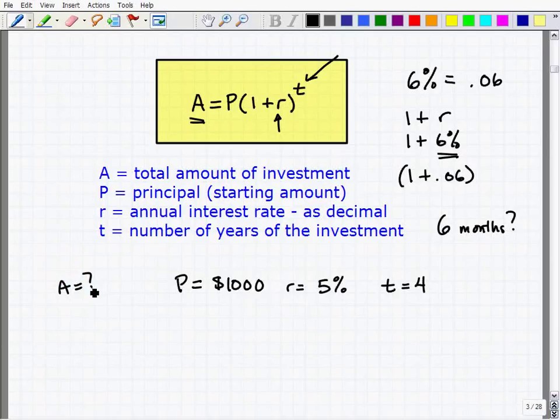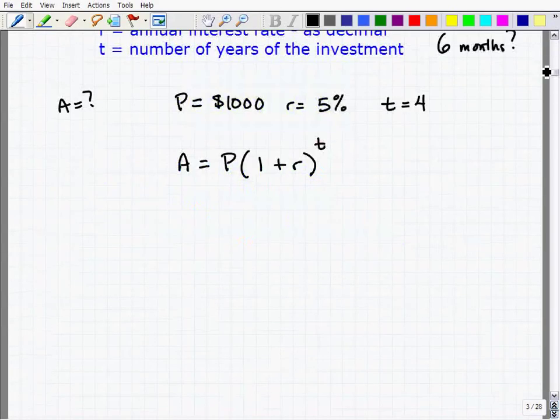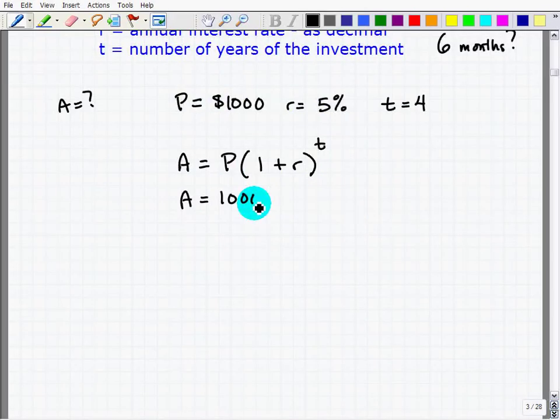So what will be the total amount you will earn? We have to use the formula. So it's going to be A equals the principal. Let's just write the formula here: principal times 1 plus r to the t power. That's the formula.